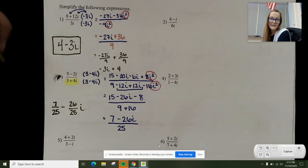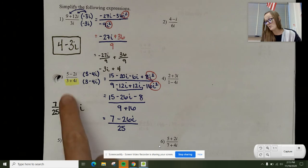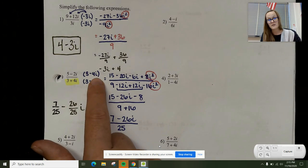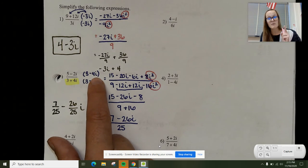Those are two examples of division. Notice there's a lot of multiplication, a lot of simplifying, and you really have to catch those i squareds and make sure you know what you're going to multiply by. Your first step is to look at the bottom. Think about what you need to multiply by to get rid of the imaginary number on the bottom and go from there.